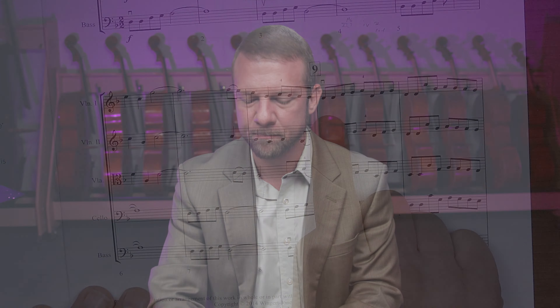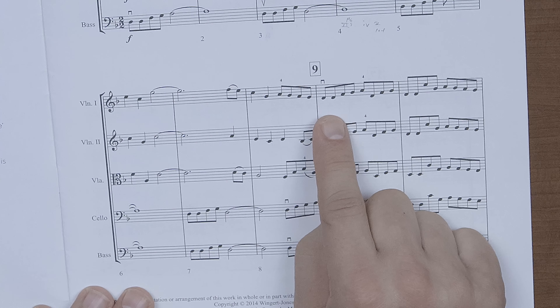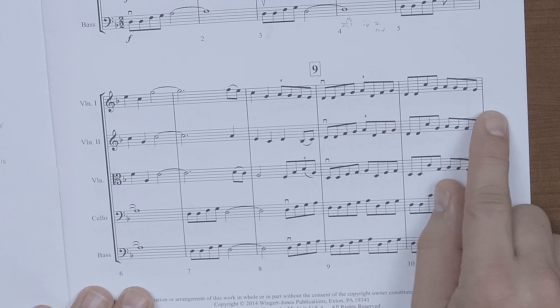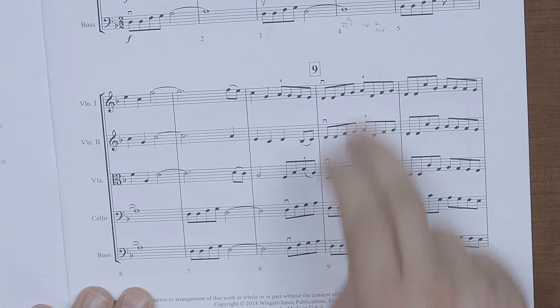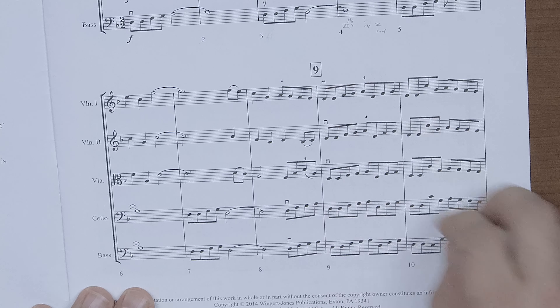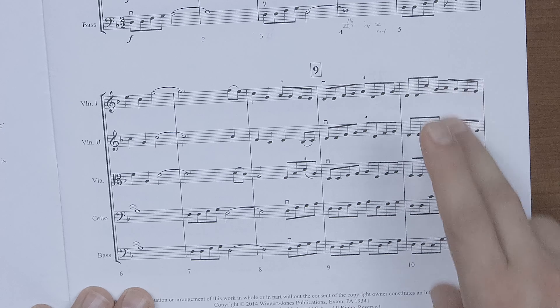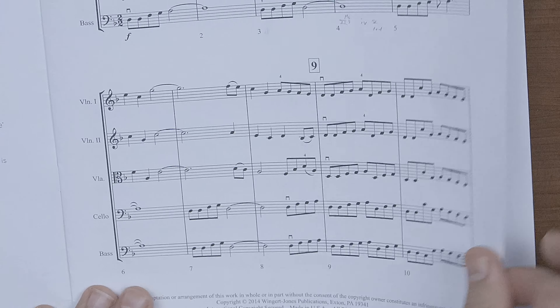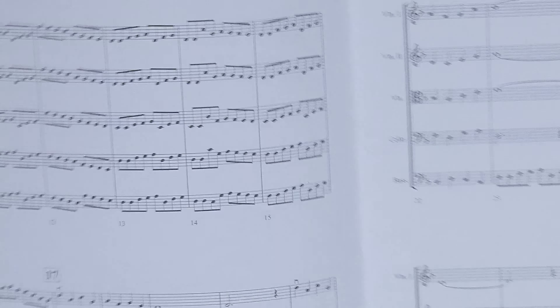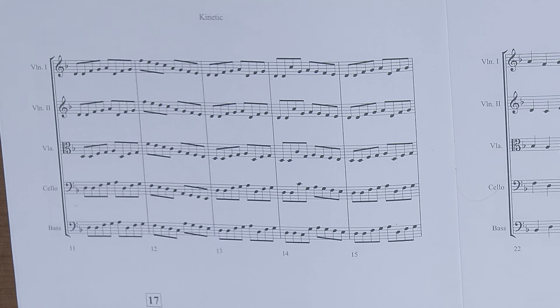Let's get out of the introduction and go to measure nine. At measure nine, we have the complete statement of the A theme, and we still have two-bar phrases. We have a clearly implied tonic harmony here and a dominant implied harmony, and that runs throughout.